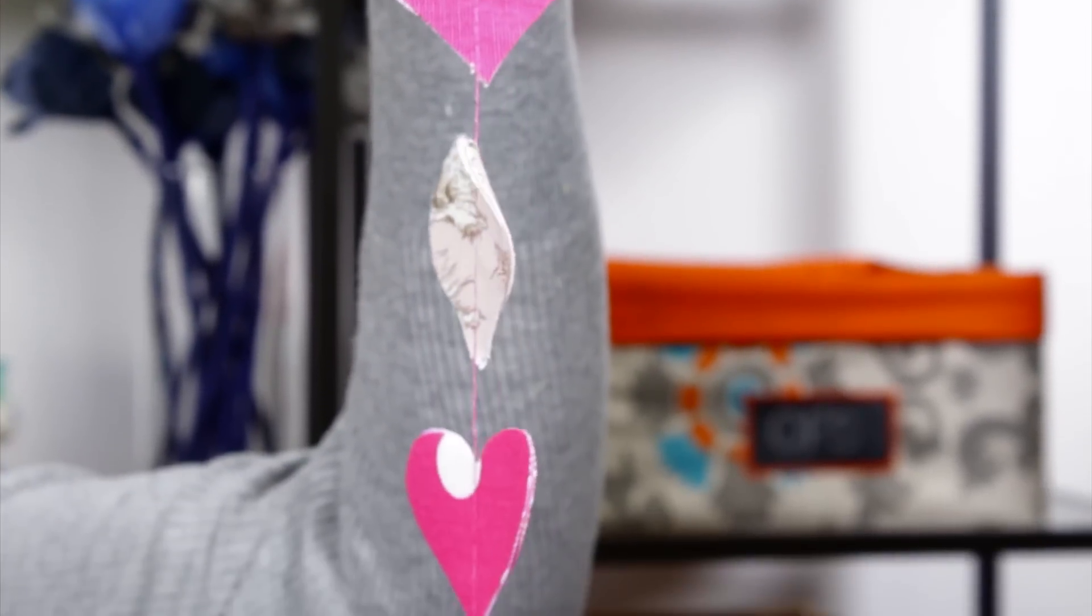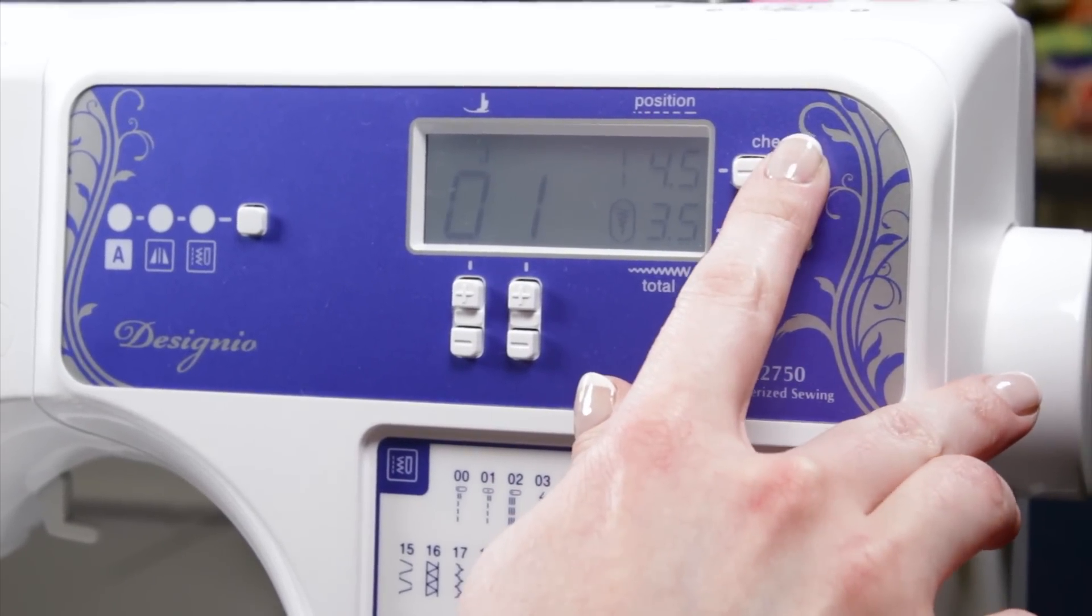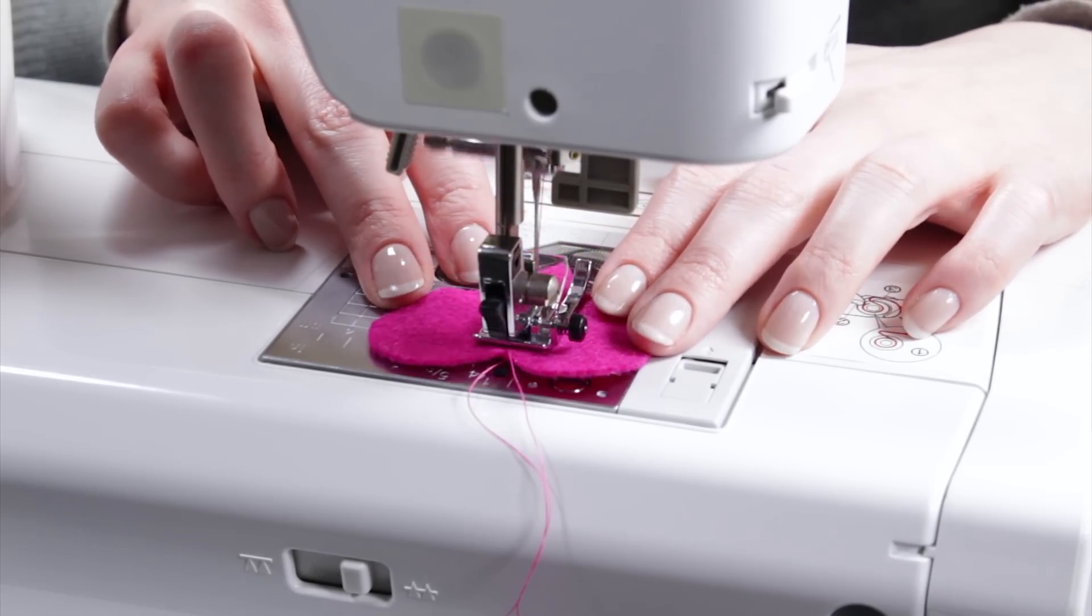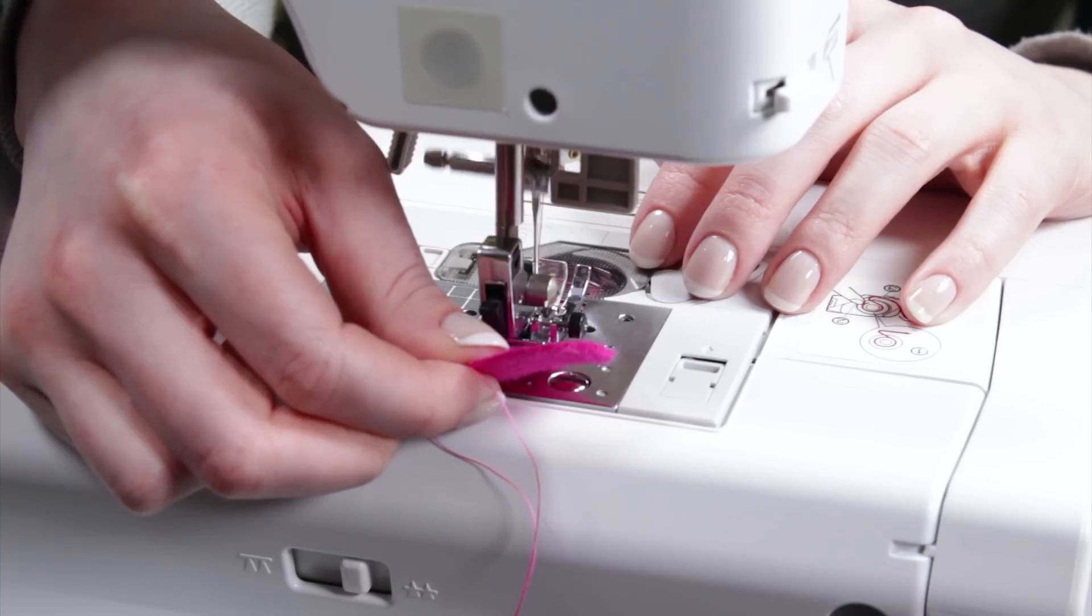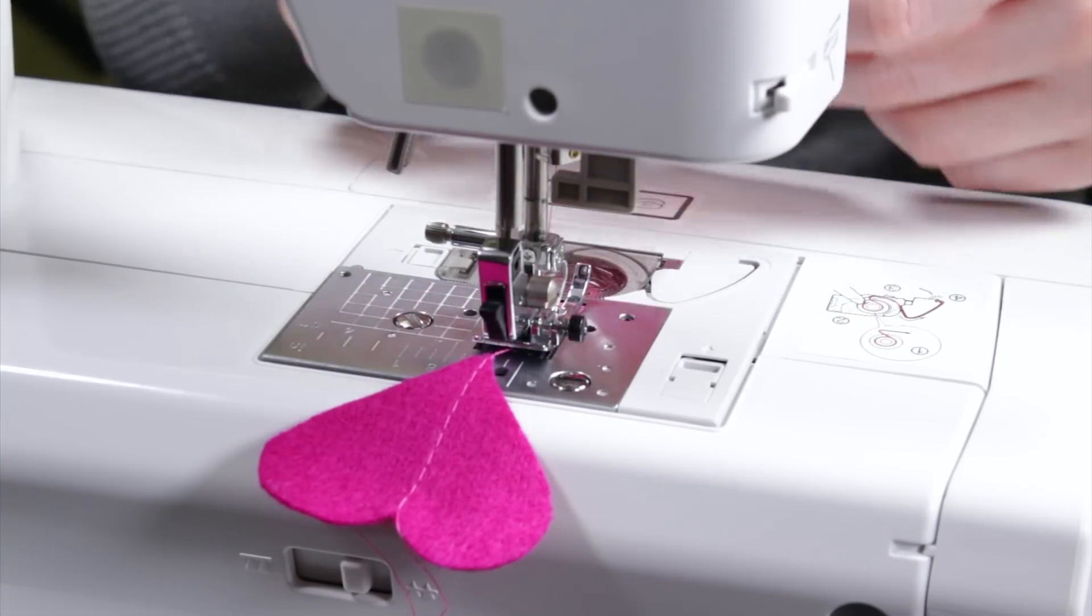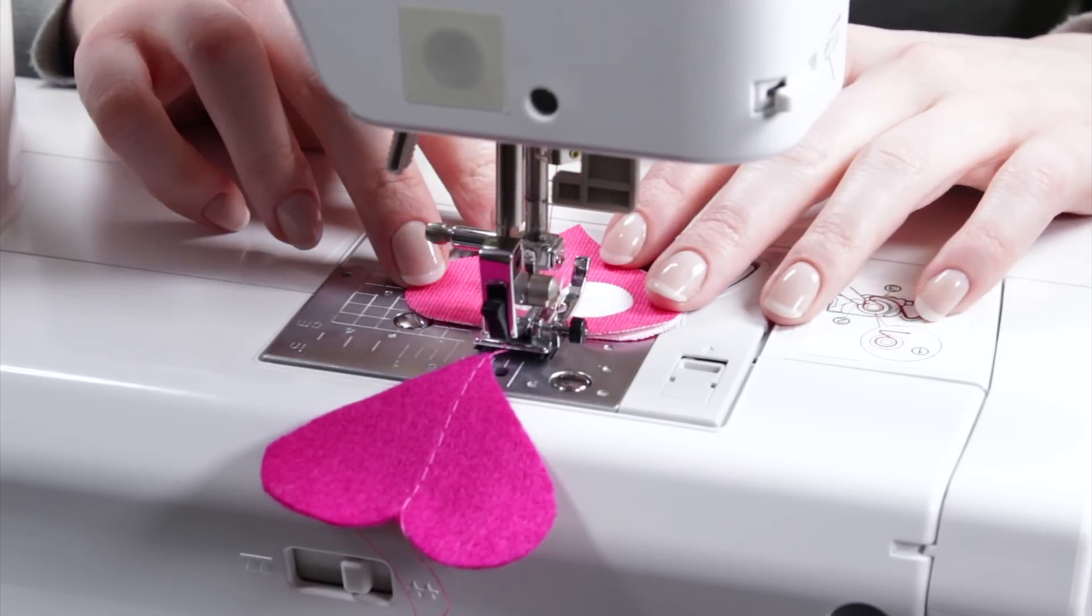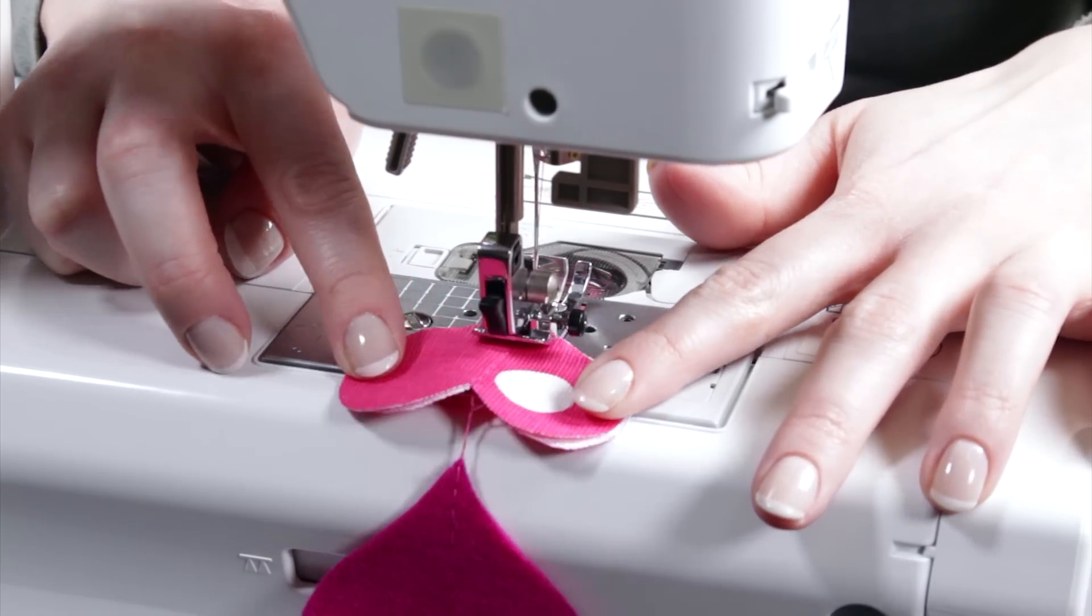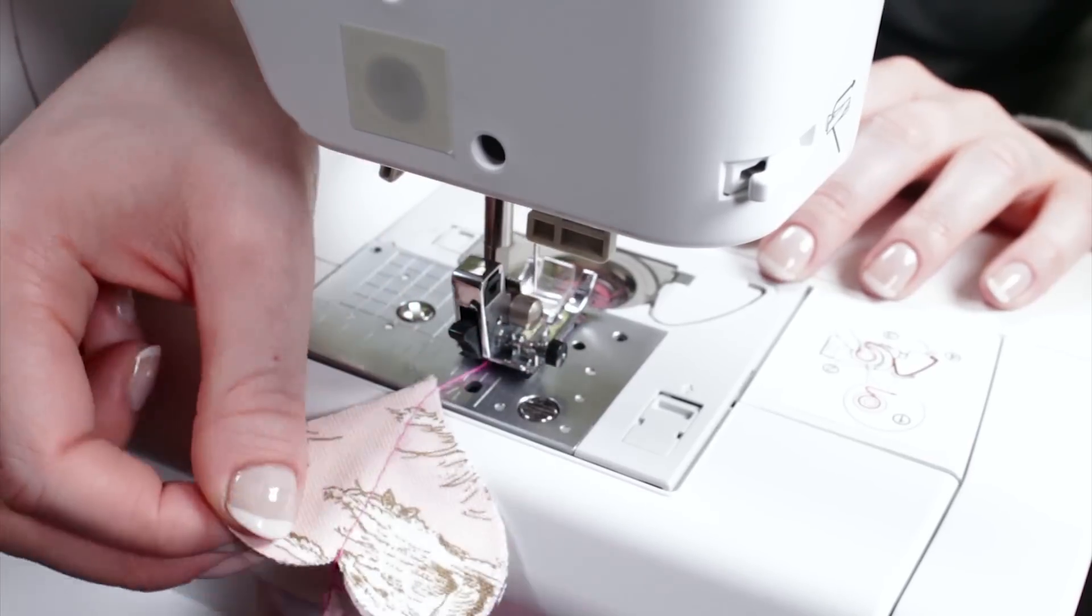I'm going to use a sewing machine to string together this heart garland. Use a straight stitch set to a long length. Sew down the center of the fabric. When you get to the end, continue to sew without the fabric for a couple more stitches while pulling slightly. Then lift the foot, position the next piece, and continue to sew. Repeat this until the garland is the length you want.